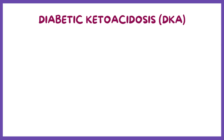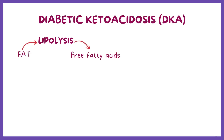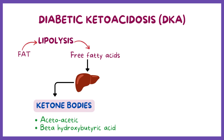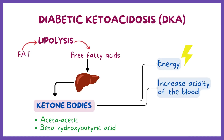To understand it, let's go back to the process of lipolysis, where fat is broken down into free fatty acids. After that happens, the liver turns the fatty acids into ketone bodies, like acetoacetic acid and beta-hydroxybutyric acid. These ketone bodies are important because they can be used by cells for energy, but they also increase the acidity of the blood, which is why it's called ketoacidosis — a type of metabolic acidosis.